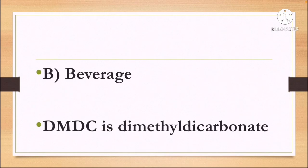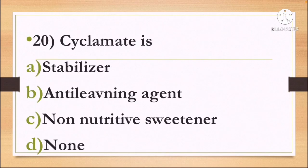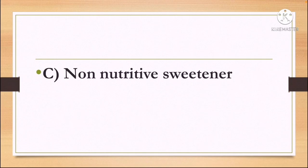Next question: Cyclamate is — Option A: Stabilizer, Option B: Anti-Leavening Agent, Option C: Non-Nutritive Sweetener, and Option D: None. The correct answer is Option C — Cyclamate is a Non-Nutritive Sweetener.